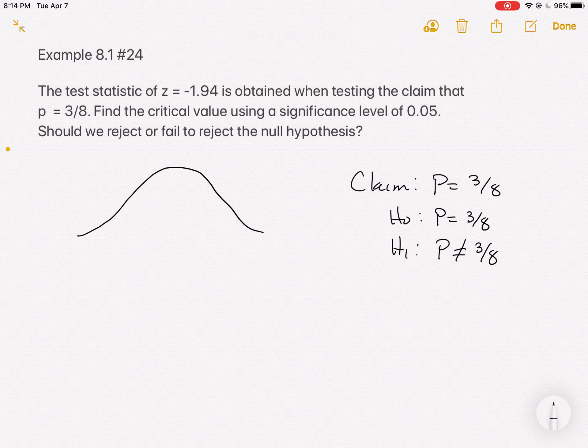Well, if you're not equal to 3/8, then you could be true on both sides of 3/8. And so this is where you get a two-tailed test. Remember, our significance level is 0.05, so that 0.05 is going to be split up into the two tails.